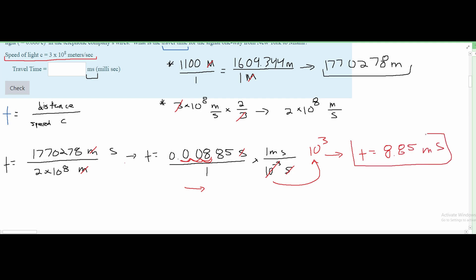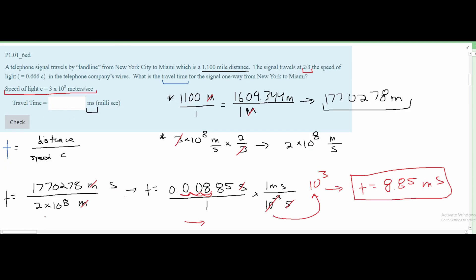This is our answer. As I explained in the last problem, if we didn't know exactly how to plug this in and accidentally did speed over distance, we would get an improper unit. We would have 1 over seconds. So if we did that, we would know we did it incorrectly and just have to flip our units. The answer for this problem is 8.85 milliseconds.